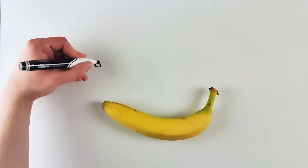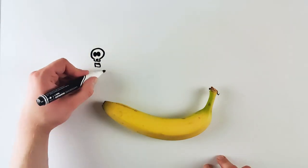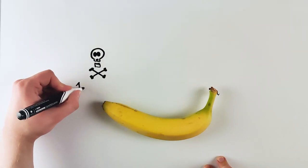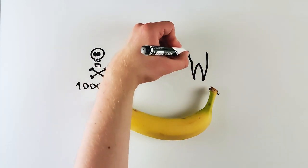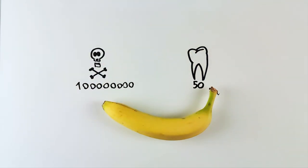And did you know that there is something like a banana equivalent dose? I was surprised too when I learned it. It's the amount of radiation equivalent to the amount that we theoretically take in when we eat a banana. For example, the deadly dose of radiation corresponds to eating a hundred million bananas, while having a tooth x-ray corresponds to 50 bananas.